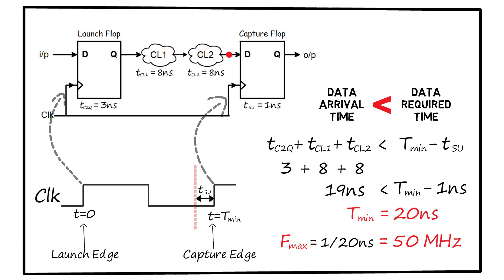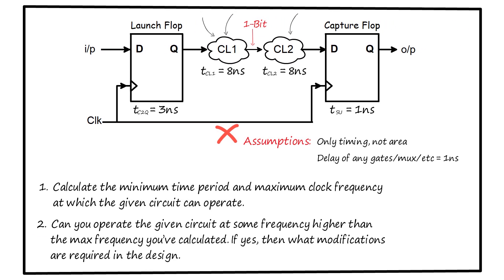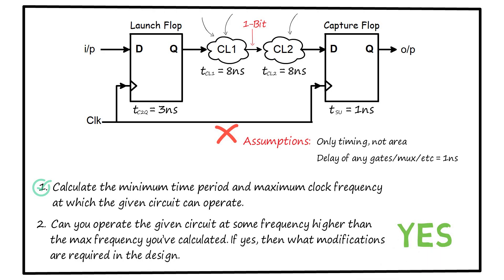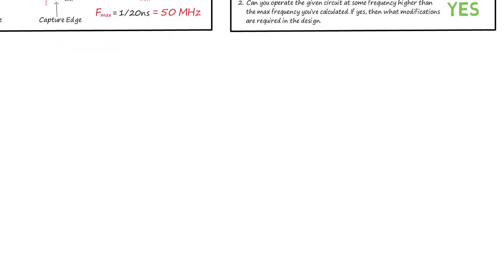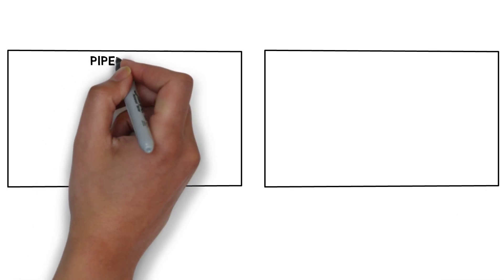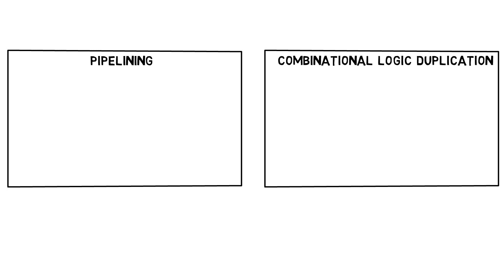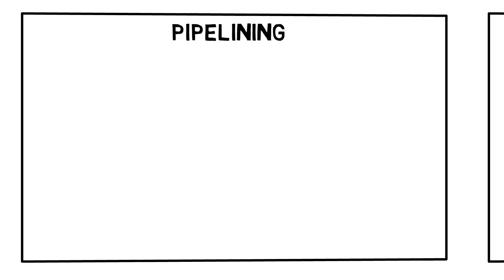Now let's look at the second part: can we operate the circuit at a frequency higher than 50 MHz? The answer is yes, but we will have to modify the circuit. We can do that in two different ways — first is pipelining, and second is combinational logic duplication. Let's see them one by one.